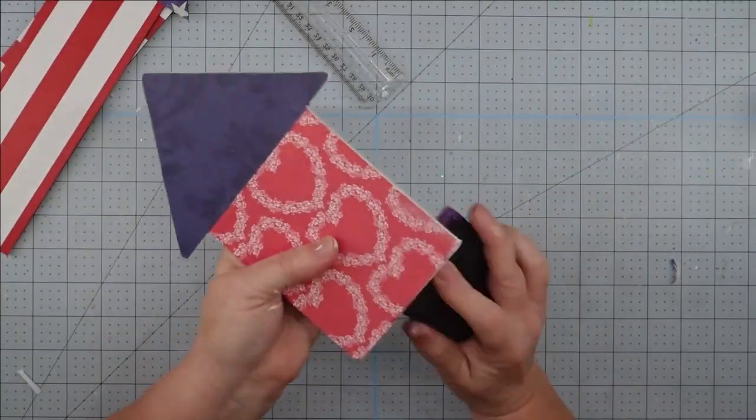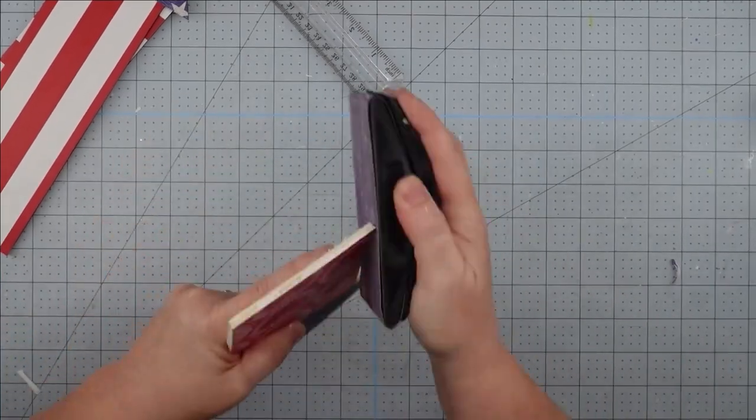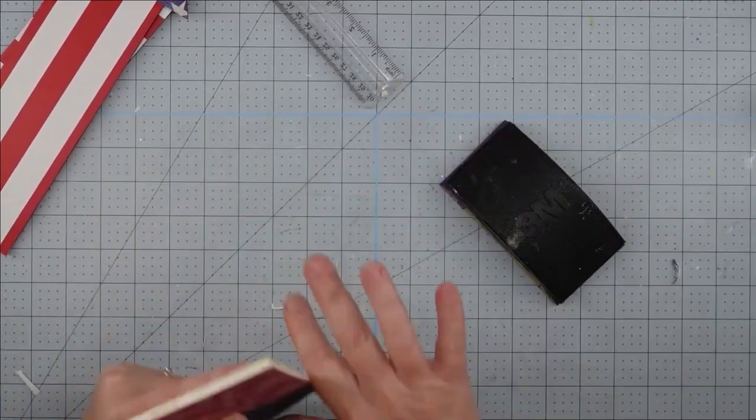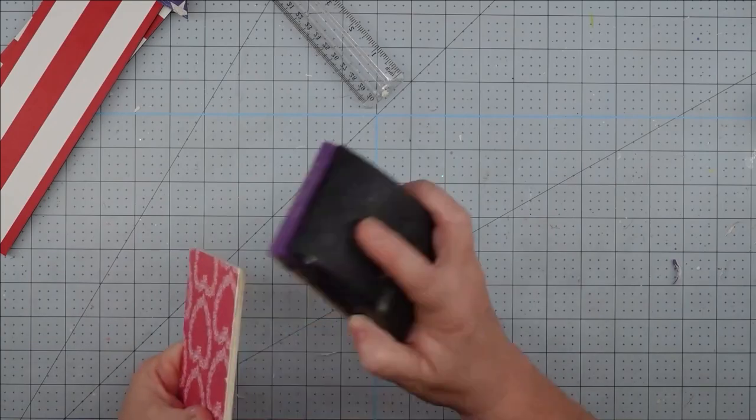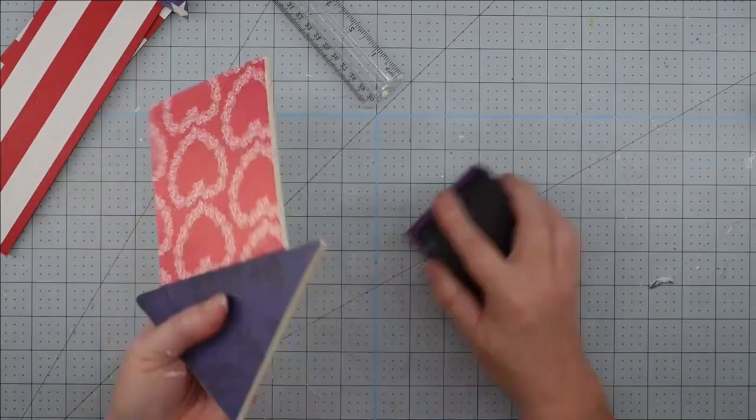Once our Mod Podge is dry, I'm going to come back with my sanding block and just go around the edges of my arrows sanding down. This is going to take off any excess paper and any splinters that you might get from the wood.